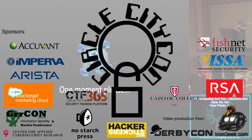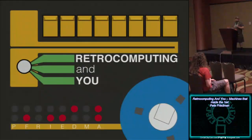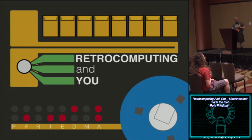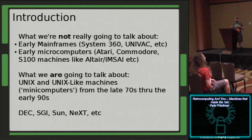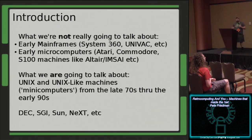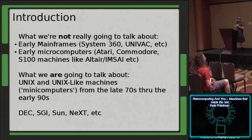My name is Pete. This is a high-level introductory talk on retrocomputing - playing around with and working with older hardware. For this talk, I'm not going to be going into older mainframe systems, IBM, CDC stuff, and I'm also not going to be talking about early home microcomputers like Altairs or Commodore. What I am going to talk about is Unix machines from about the mid-70s to the early 90s, coming from Digital Equipment Corporation, Sun Microsystems, and SGI.